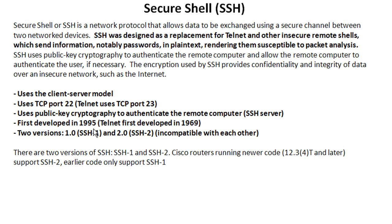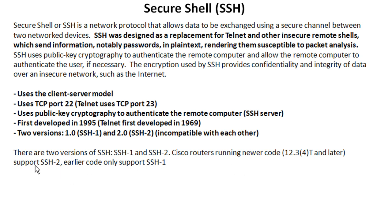A couple of other points: SSH was developed in 1995, whereas Telnet was developed in 1969, so it's newer. There are two versions — SSH1 and SSH2 — and they are actually incompatible with each other. Older Cisco code, 12.3.4T and earlier, will only support SSH1. Anything newer will support both SSH1 and SSH2, and it's suggested you use SSH2 if at all possible.